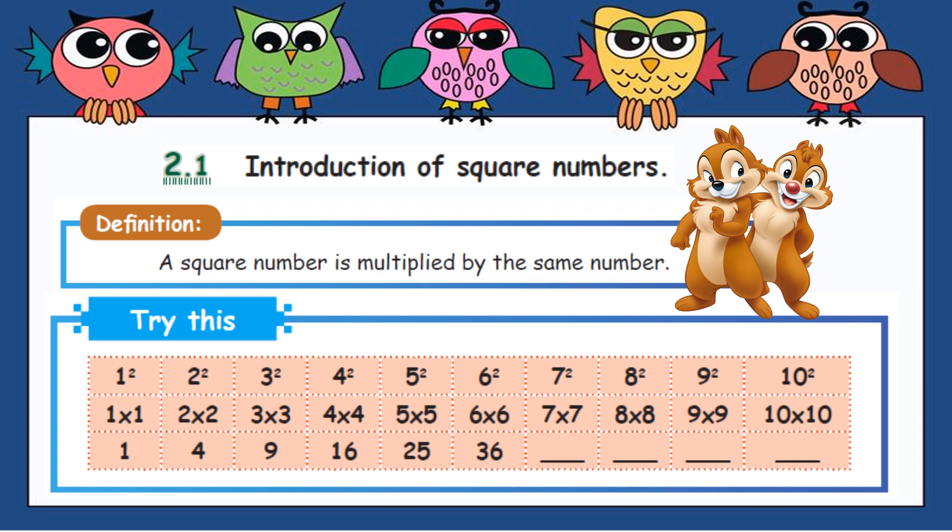Now come here, seven square. Seven times seven, what is the answer? Super! Seven times seven is forty-nine, right. Eight times eight you also know, isn't it? Sixty-four. Nine times nine you know well, yes, nine times nine is eighty-one. Good! Ten is easy, isn't it? Ten square, ten two times, so ten times ten is hundred.